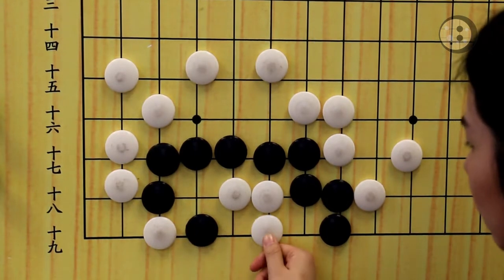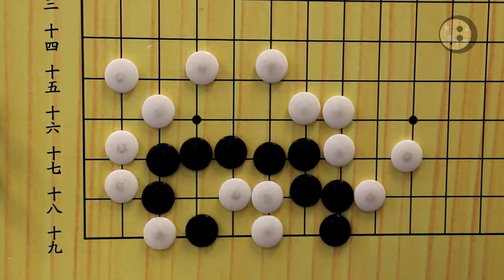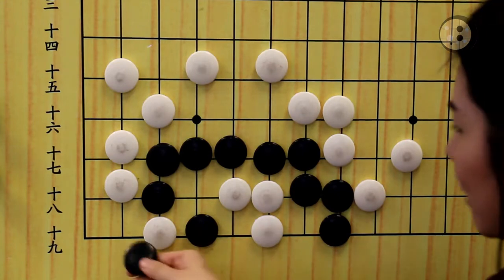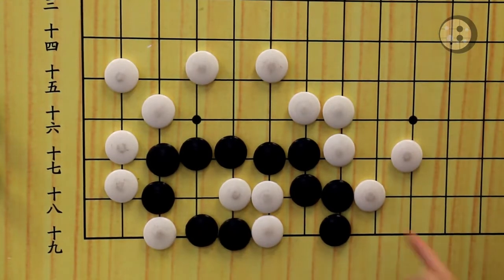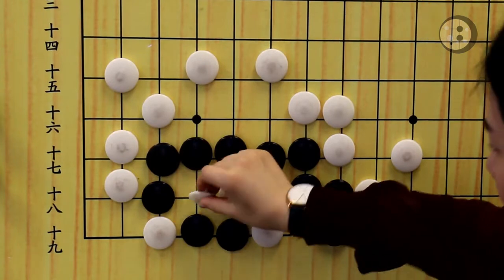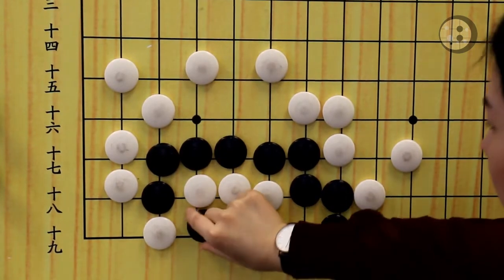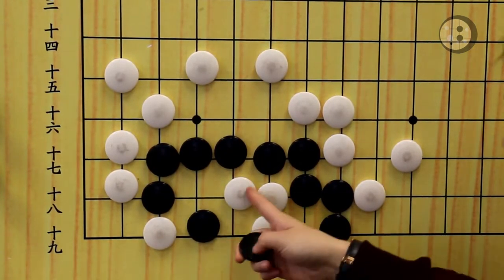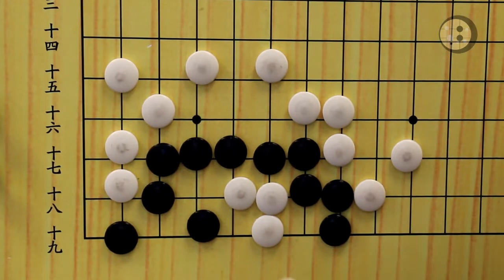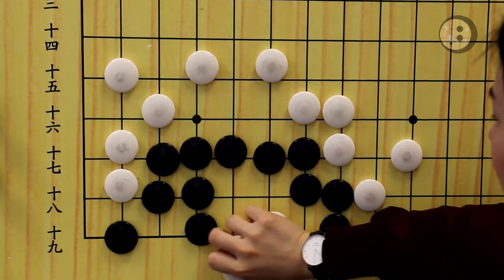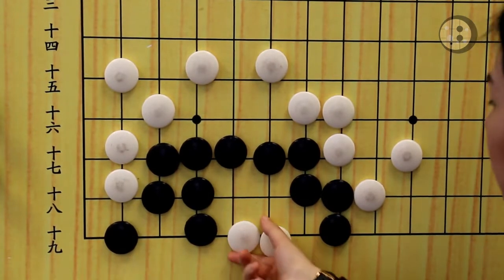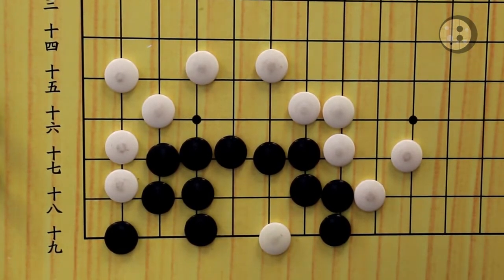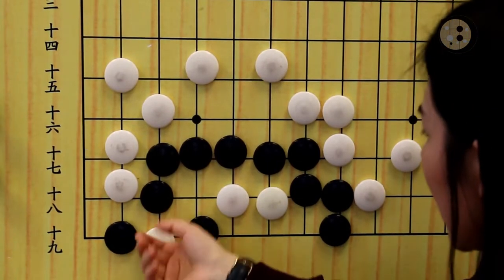After this exchange, white can now make black to a dead shape. Now you're not able to throw in here because these two stones will get captured. In order to play here, black needs to capture the stone first, but now it's white's turn so white can make the shape to square four or later on also a bulky five, so black is not alive.